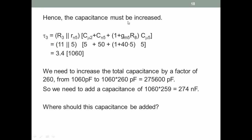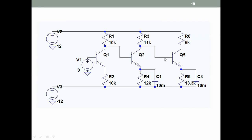The only thing we can do is increase the capacitance. We need to increase the total capacitance from 1060 picofarads by a factor of 260, so we need to add a capacitance of approximately 274 nanofarads. This capacitance must be connected from that node to ground — at the collector of Q2 / base of Q5.